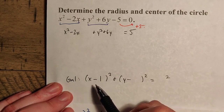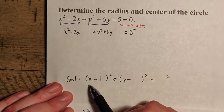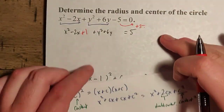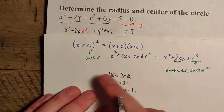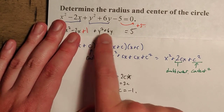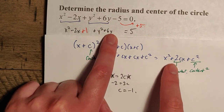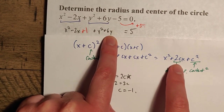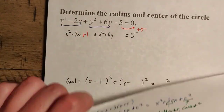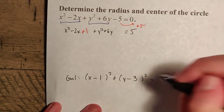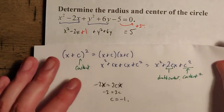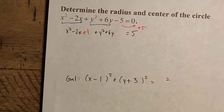In much the same way, we can do this with the y² terms. We have y² + 6y, so 6y = 2cy, meaning 2c = 6, and our constant is positive 3. So this becomes (y + 3)², and the last term is 3² = 9, so we add a plus 9 here.